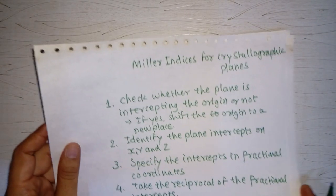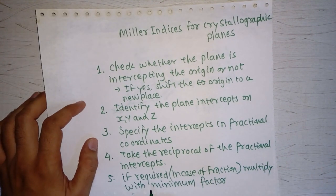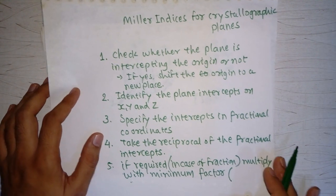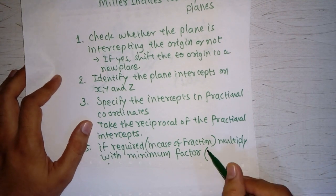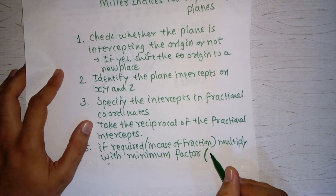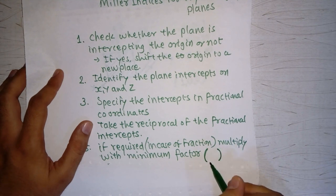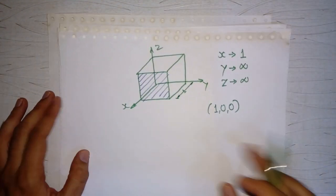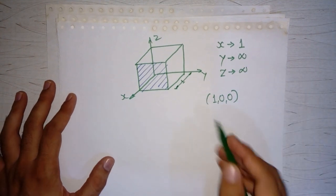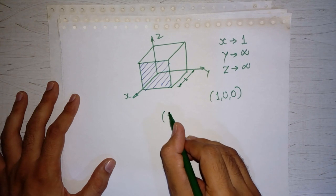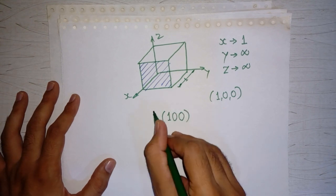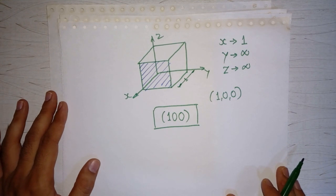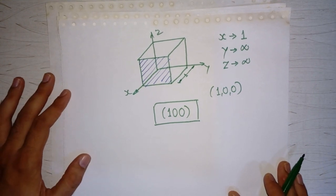The last step is to represent the values in a bracket without any separation — that is how we write the designation. After taking the reciprocal, we write this in bracket without any separation. That will be the designation of this plane. This is simple.